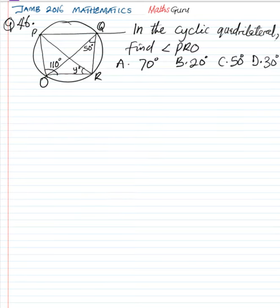Question number 46. In the cyclic quadrilateral, find angle PRO. Angle PRO. That is this angle given here.